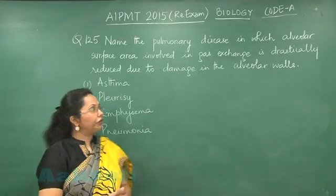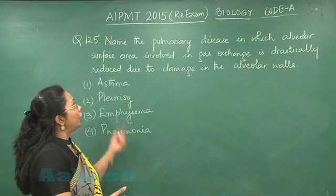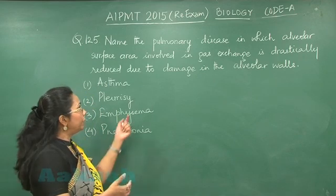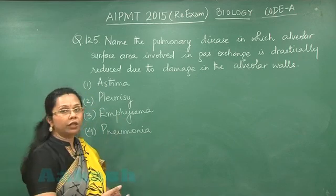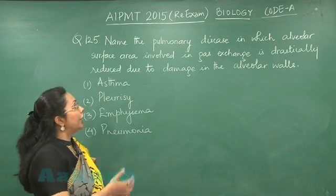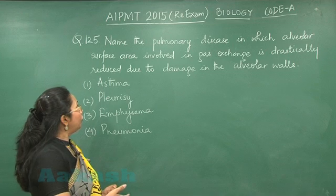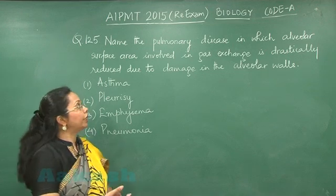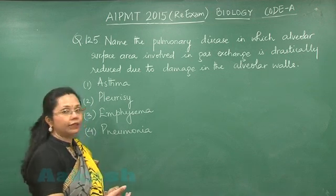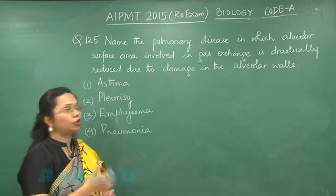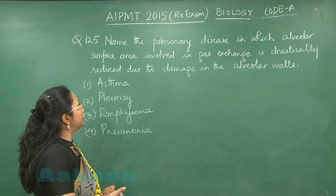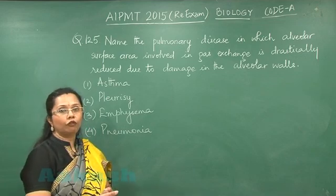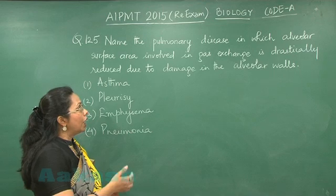Question 125. In this we have to find the pulmonary disease in which the alveolar surface area involved in gaseous exchange is drastically decreased due to damage of the alveolar walls.